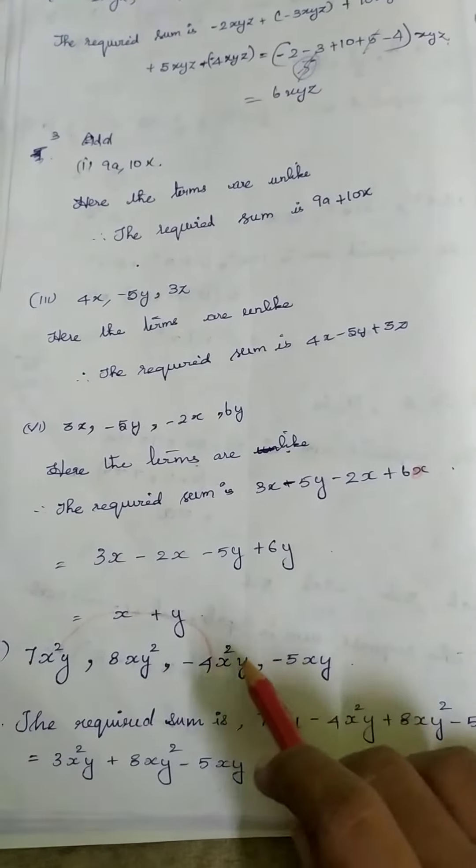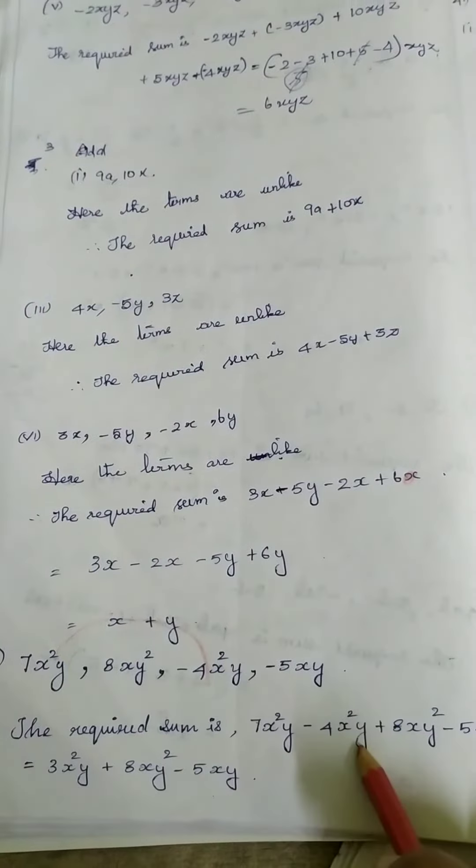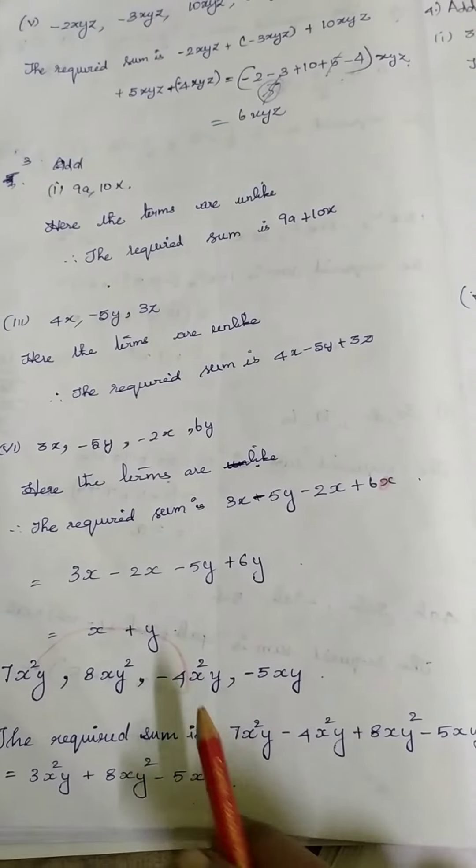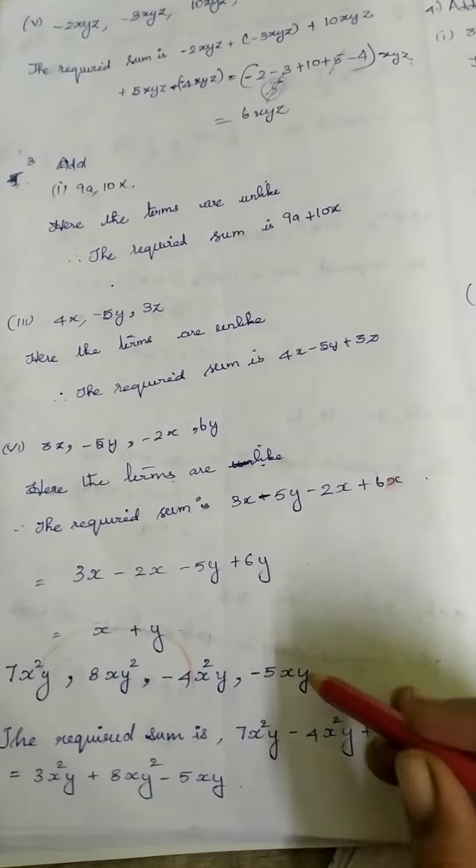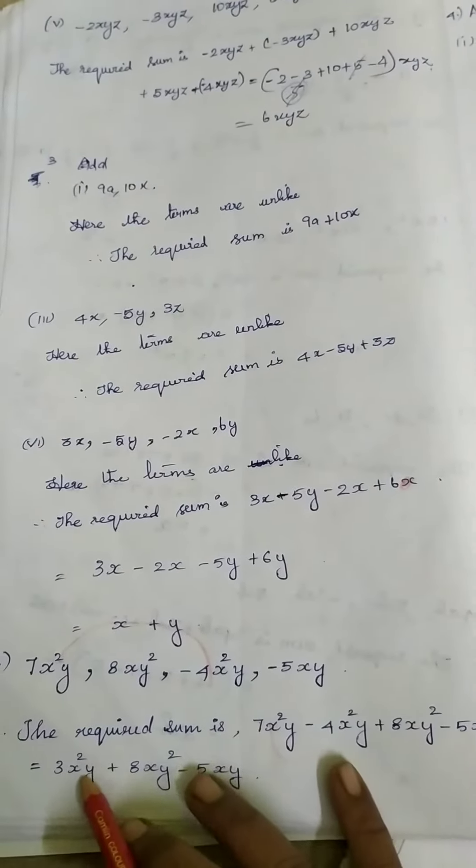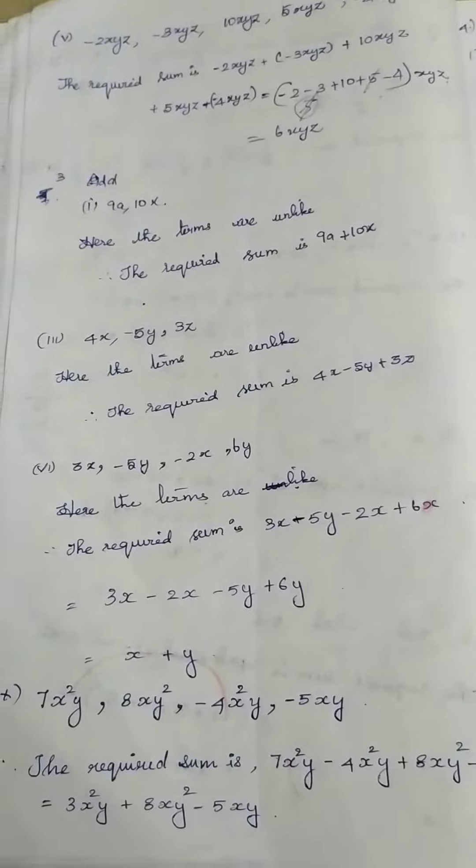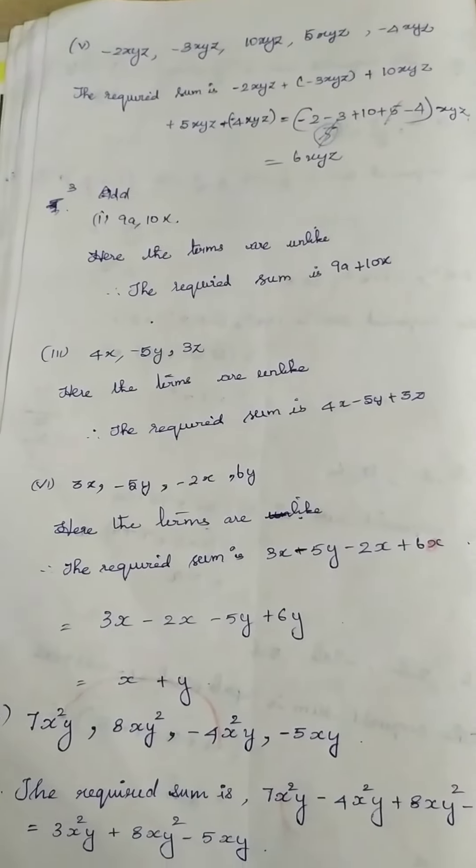7X²Y. Next to the X²Y term is minus 4X²Y, then 8XY² minus 5XY. These 2 terms, if you add, you will be getting 3X²Y. Remaining terms you have to write as it is.